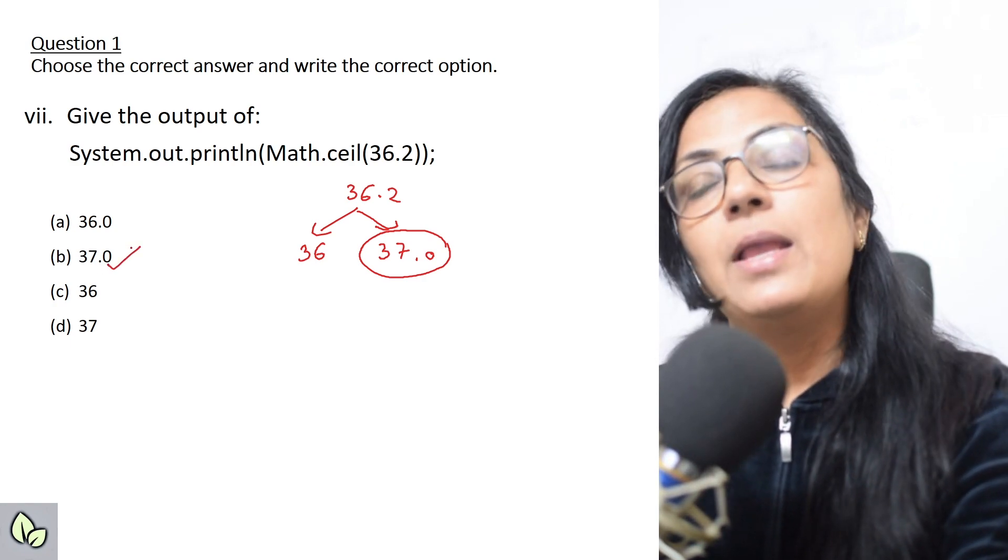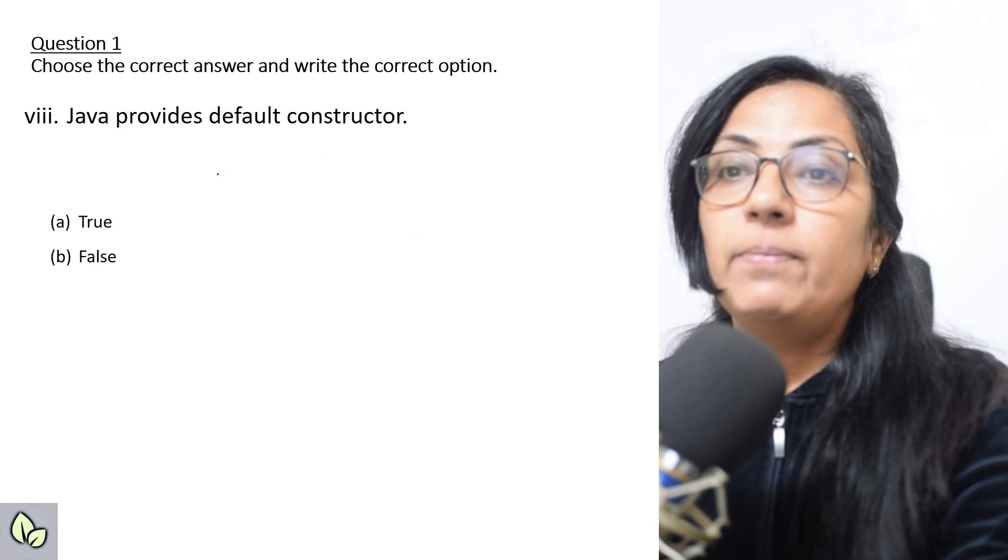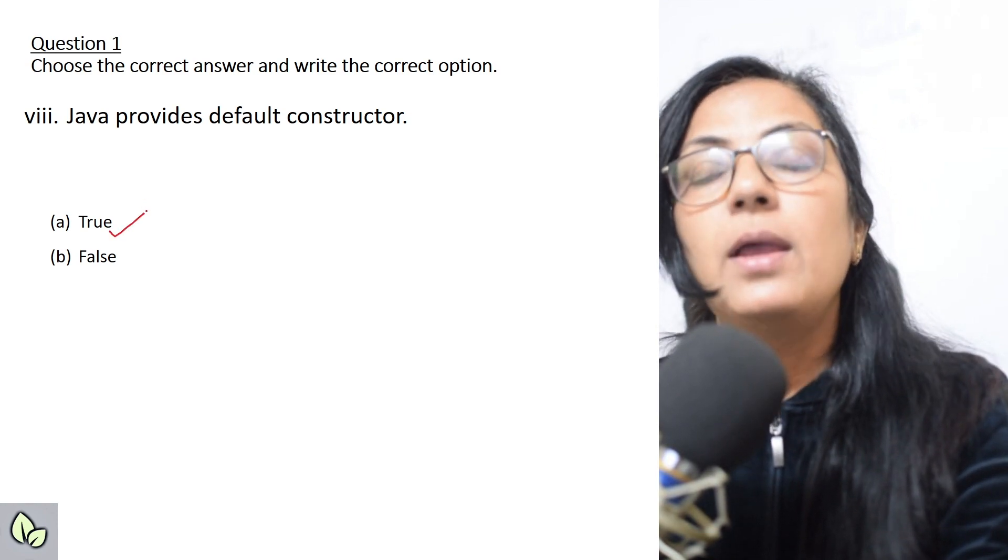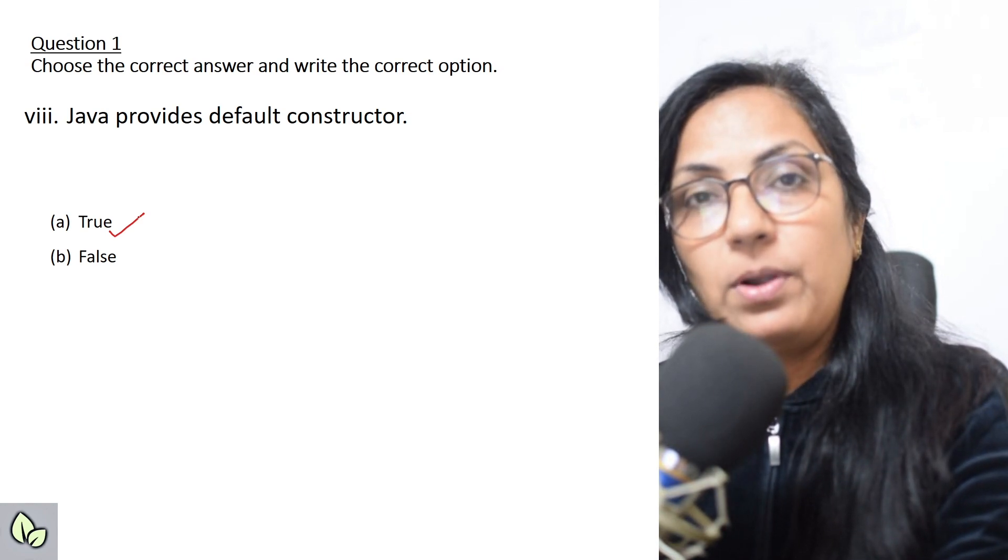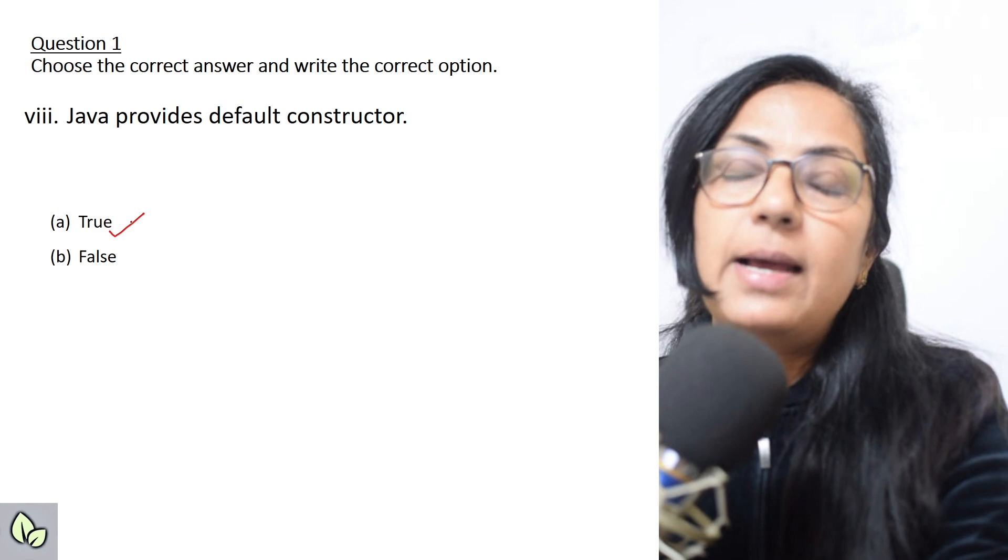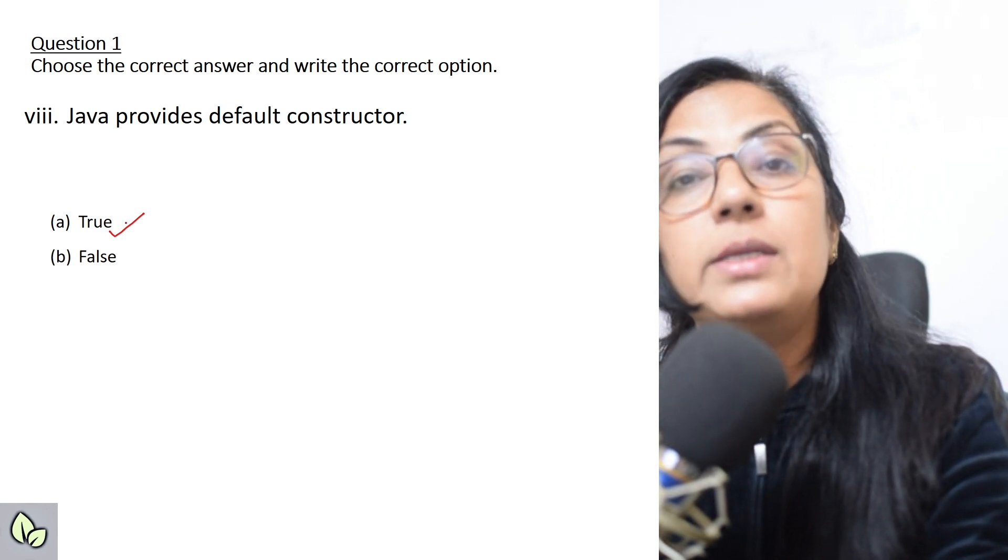We move on to the next question. Java provides default constructor, true or false? What do you say? It is true. Agar hum koi constructor nahi likhte hai program mein, and when you are creating the object of the class, automatically a default constructor is called, it is invoked, and with which values? With the default values of the instance variables.